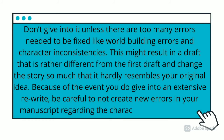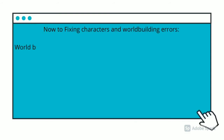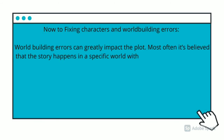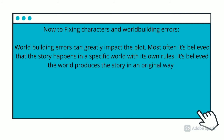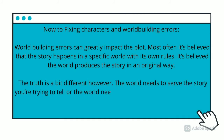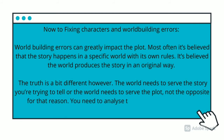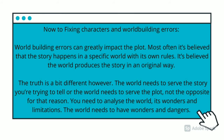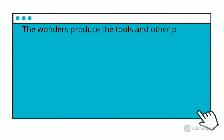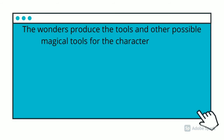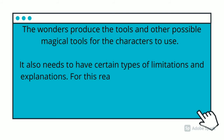Now, to fixing characters and world-building errors. World-building errors are impactful because the world needs to support the story you're trying to tell — the world needs to enable the plot. For that reason, you need to analyze the world's wonders and limitations. The world needs to have wonders and dangers, and also offer possible tools for the characters to use, while also having certain limitations and explanations. You need to edit your novel with world-building in mind after you've edited the story itself.